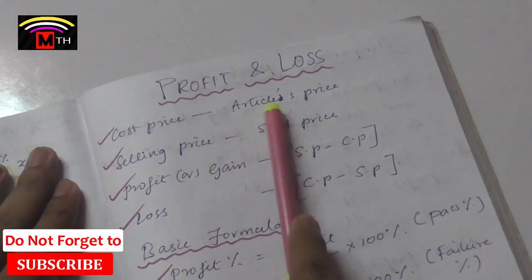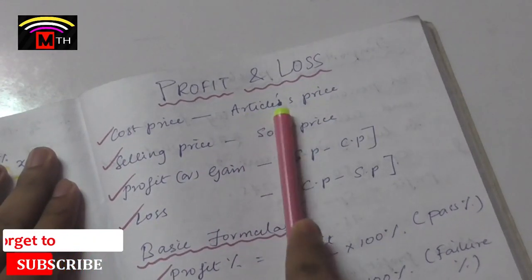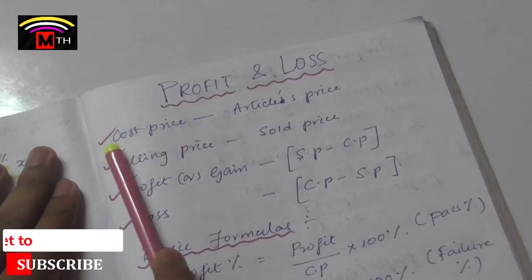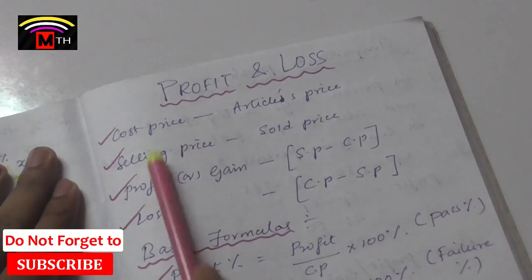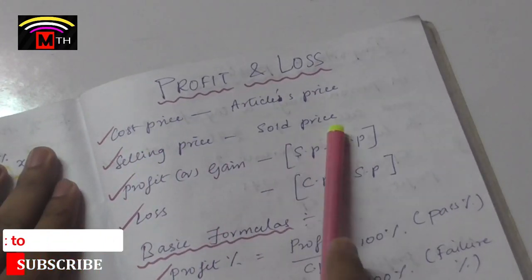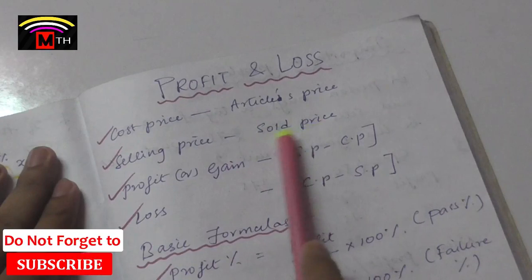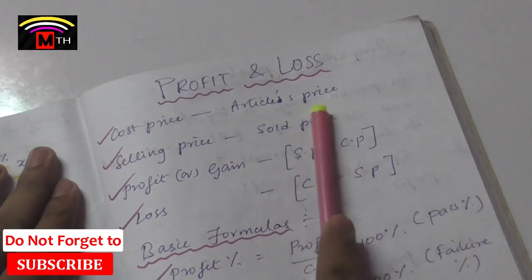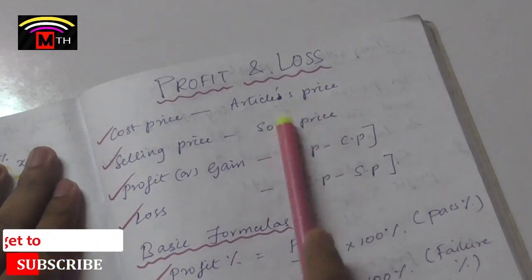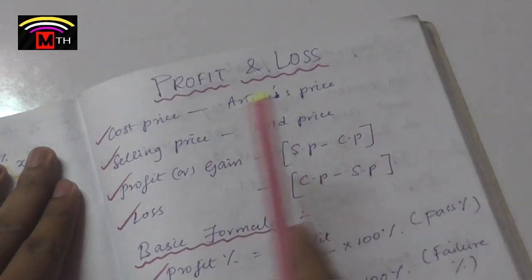Cost Price is the article's price. If you want to know the price, we find the CP. Selling Price is the sold price — the price at which an item is sold is the Selling Price.